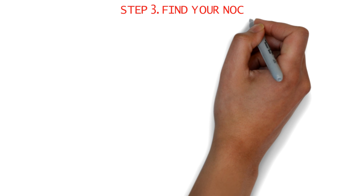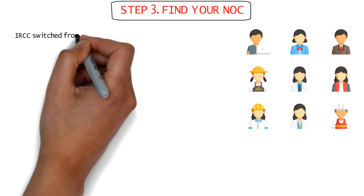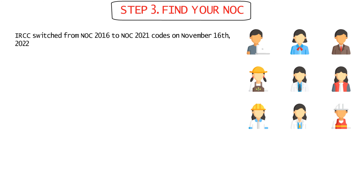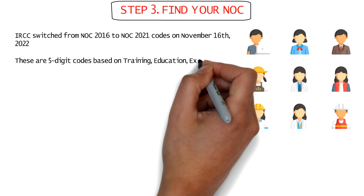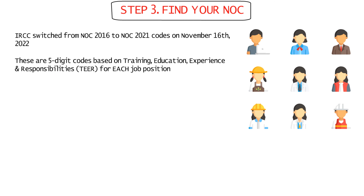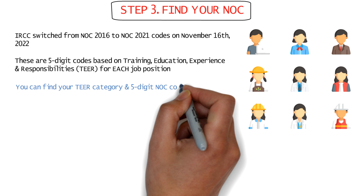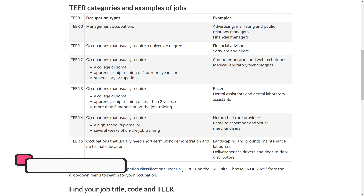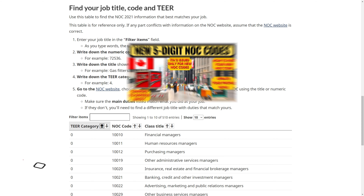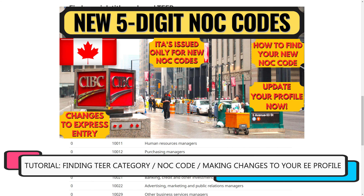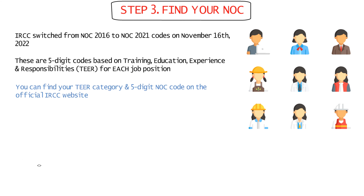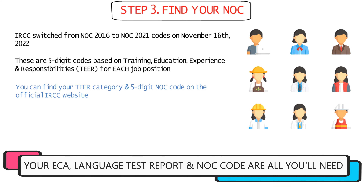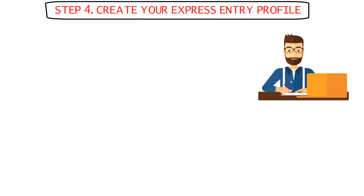The next step is finding your NOC. IRCC has recently switched from NOC 2016 to the NOC 2021 codes as of November 16th, 2022, which are five-digit codes based on the training, education, experience, and responsibilities for each job position. If you don't know your tier category or new five-digit NOC code, you can get this information on the official IRCC website on the 'Find Your NOC' webpage. When you know your NOC code and you have your ECA and language test results, you're now ready to create your Express Entry profile or IRCC account.